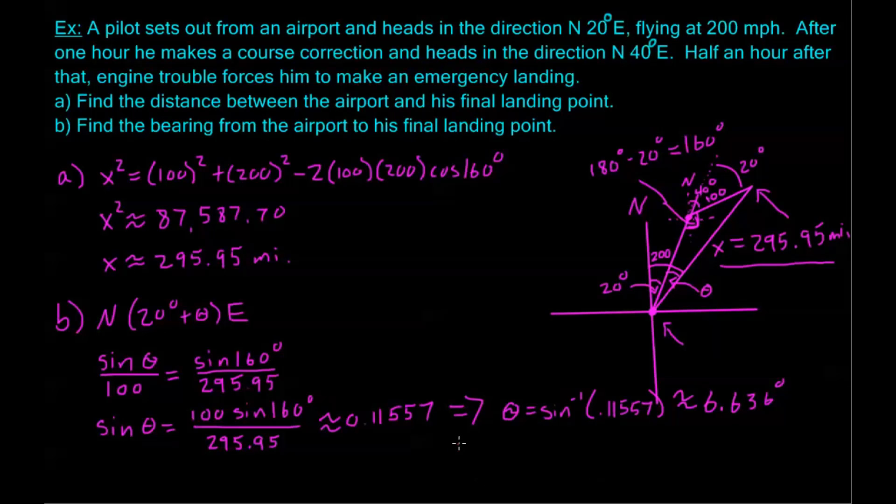So our final answer is the bearing from the airport to the final landing point was north 26.636 degrees east. Not 6.636, because remember, we already had a 20 degree bearing, and we're adding to that 6.636. So we take this, we're going to plug in what we found for theta, and this is our final answer for the bearing. So this is our final answer for part B, and this was our final answer for part A.